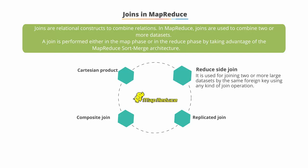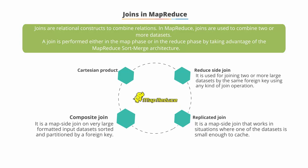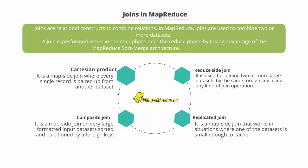A reduced side join is used for joining two or more large datasets with the same foreign key with any kind of join operation. A replicated join is a map side join that works in situations where one of these datasets is small enough to cache, vastly improving its performance. A composite join is a map side join used on very large formatted input datasets sorted and partitioned by a foreign key. And lastly, a Cartesian product is a map side join where every single record is paired up with another full dataset. This style of join typically takes a significantly longer period of time to execute.